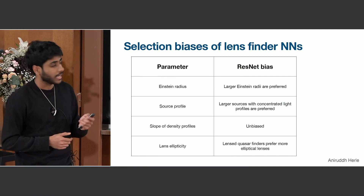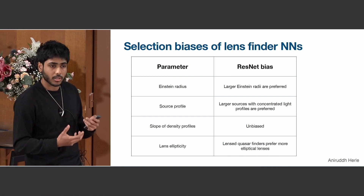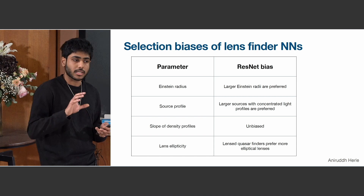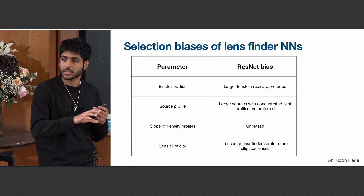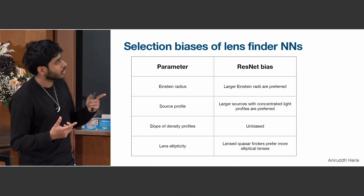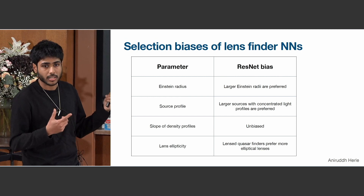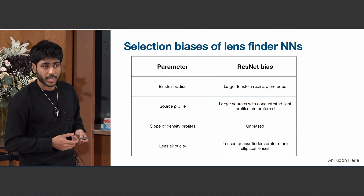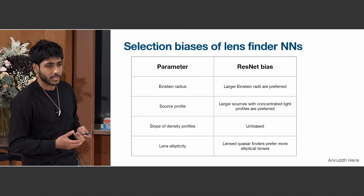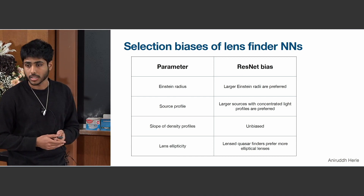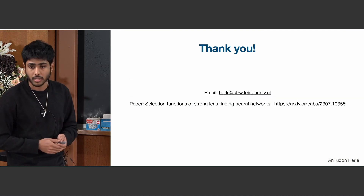The slope of the density profile does not influence the network, so feedback model constraints are not going to be biased by the CNN. Another interesting finding was that for lensed quasar systems, the network prefers four-image systems over two-image systems. Higher ellipticity in the lens mass creates more quads, so this preference introduces a bias toward higher lens mass ellipticities. The basic conclusion is that CNNs can bias strong lensing samples that are detected, and this has an effect on the science.